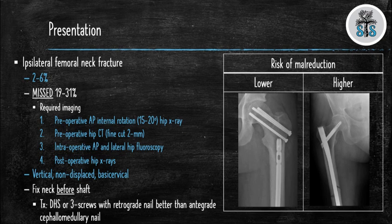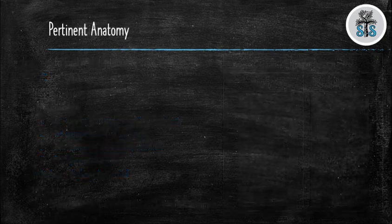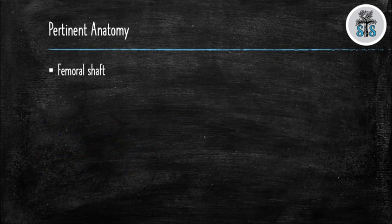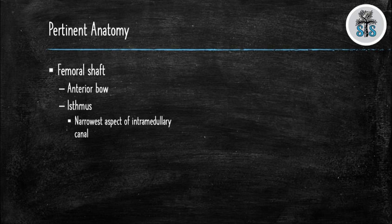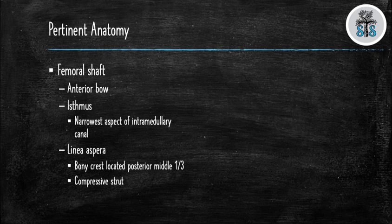The image using a retrograde nail and three percutaneous screws has a lower risk of malreduction. Turning our attention to pertinent anatomy: the femoral shaft has an anterior bow to it. The isthmus is the narrowest aspect of the intramedullary canal. The linea aspera is located in the posterior middle third of the femoral shaft and acts as a compressive strut against the anterior femoral bow.